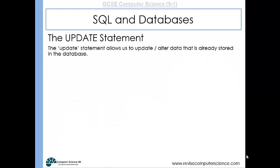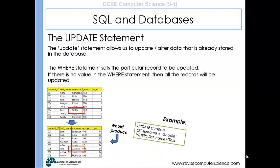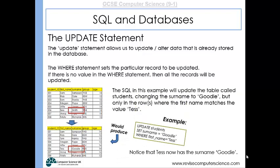The UPDATE statement allows us to update data that's already been stored. The WHERE clause sets the particular record to be updated, and if there is no WHERE clause then all records will be updated. For example: UPDATE students SET surname = 'Goodie' WHERE first_name = 'Tess' will update the surname to 'Goodie' only in the row where the first name matches 'Tess', as shown in the example on the bottom left-hand corner of this slide.